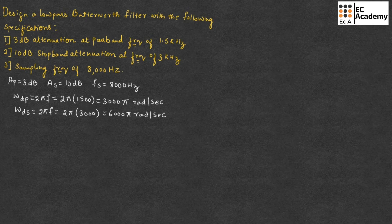The sampling period T can be given as 1 divided by fs, which is 1 divided by 8000 seconds.